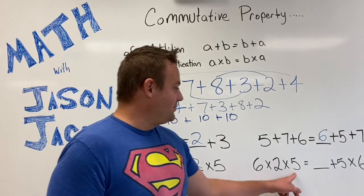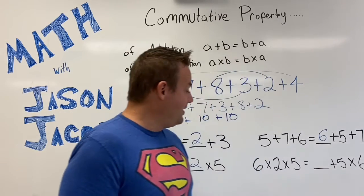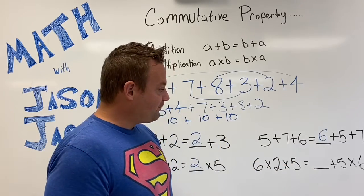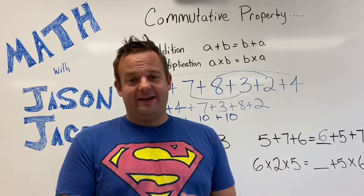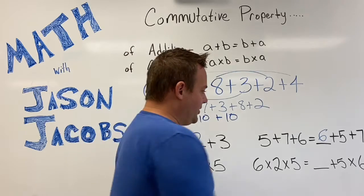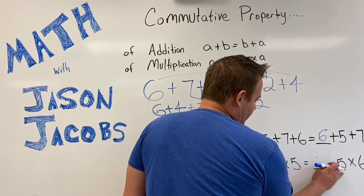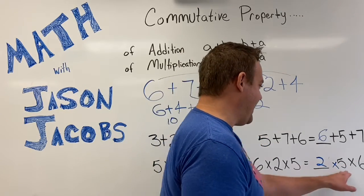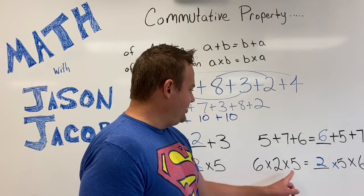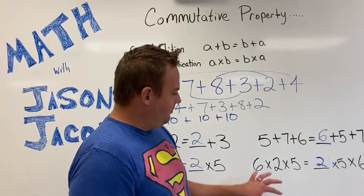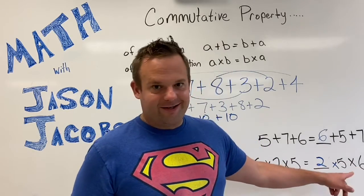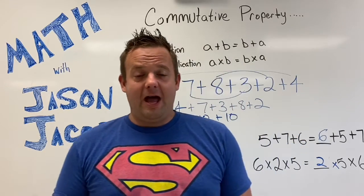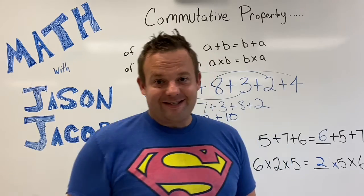Let's look at this one: six times two times five is the same as what times five times six? Well, six times two is 12, and then 12 times something might be a little more difficult. So notice perhaps two times five is 10, and multiplying by 10 is a lot easier. Maybe you want to do two times five times six, because 10 times six is 60. So we just switched the factors around — as long as it's all multiplication. That is the Commutative Property of Multiplication. My name is Jason Jacobs. Please like and subscribe, and I'll see you next time. Keep doing your math.